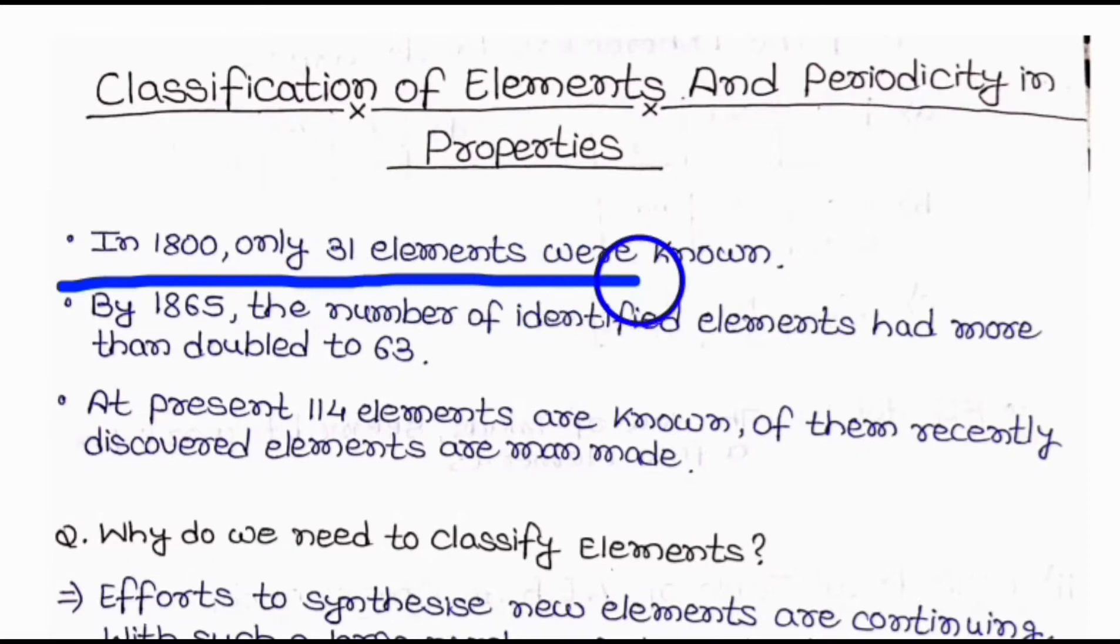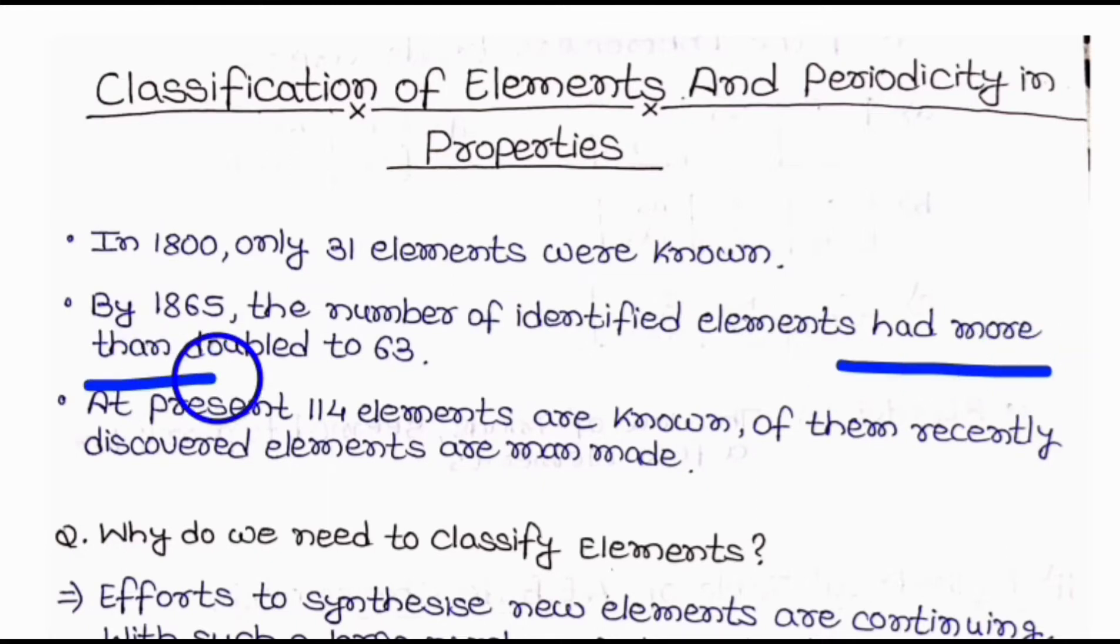Classification of Element and Periodicity in Property. In 1800, only 31 elements were known. By 1865, the number of identified elements had more than doubled to 63. At present, 114 elements are known. Of them, recently discovered elements are man-made.